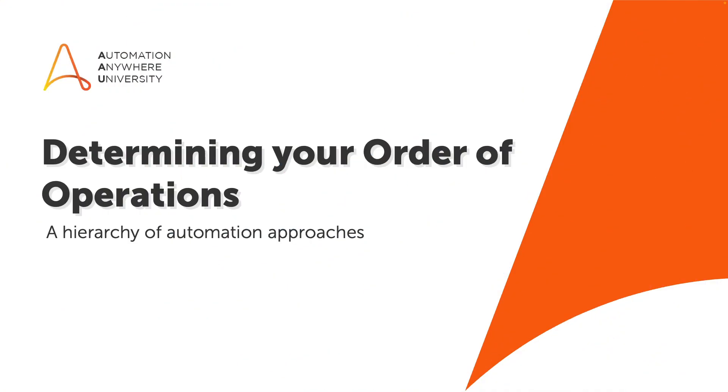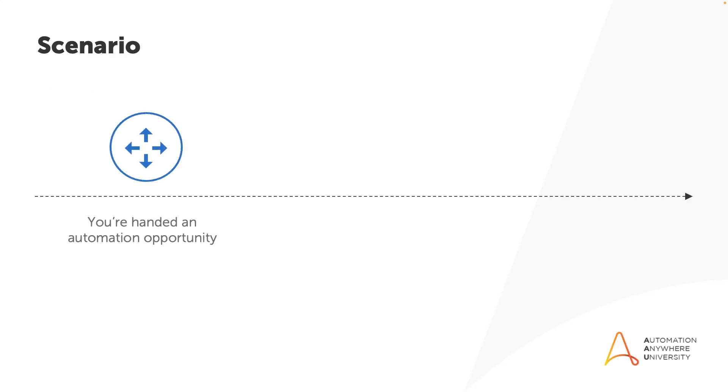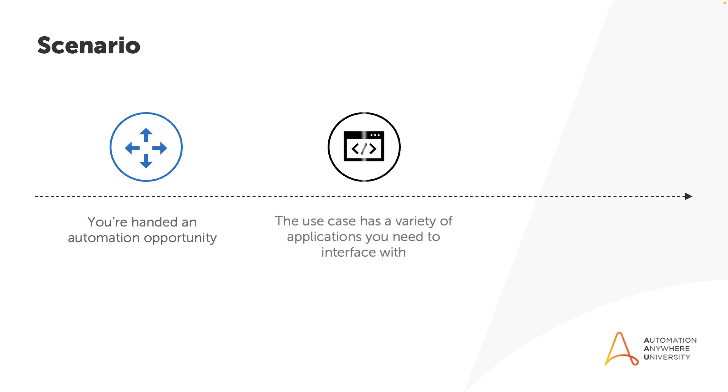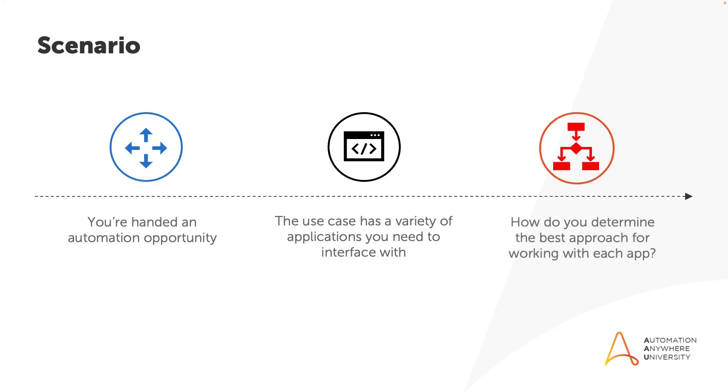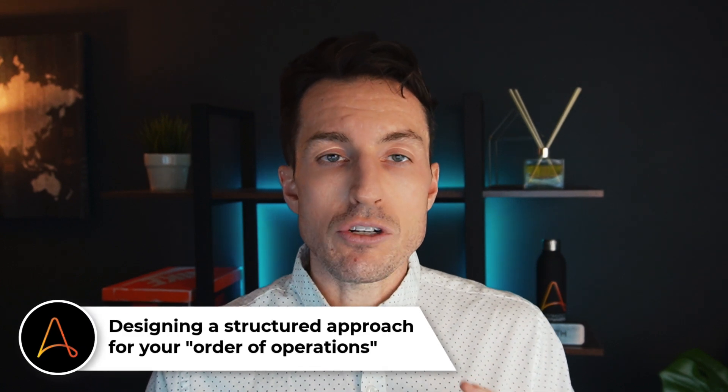In this video we want to take a look at establishing an order of operations when it comes to interfacing with different applications as you develop an automation. What we want to do is develop a hierarchy of automation operations. Imagine this scenario: you've been handed an automation opportunity that has a variety of different applications to work with — from thick client applications to those with an API and those without. How do you determine the best approach for working with each application? If you don't have a standardized approach for interfacing with different applications, that's something we need to fix. Let's talk about a structured approach.